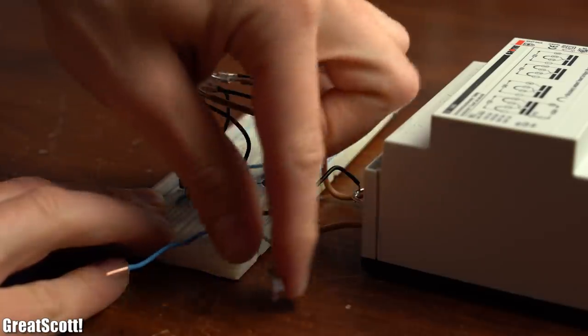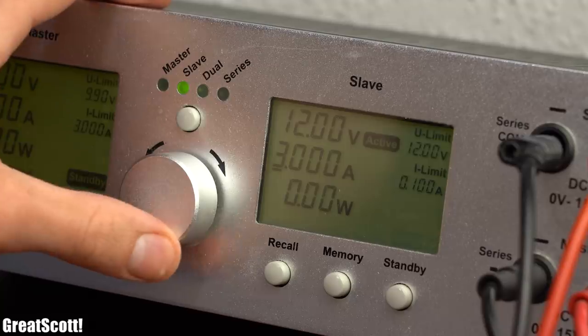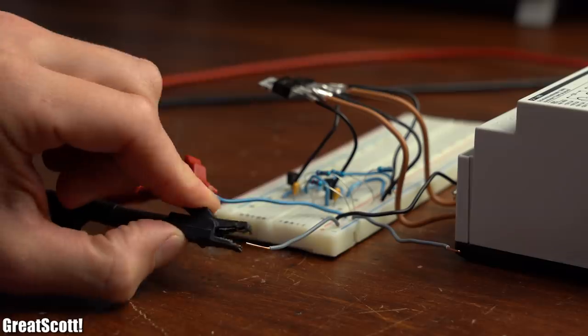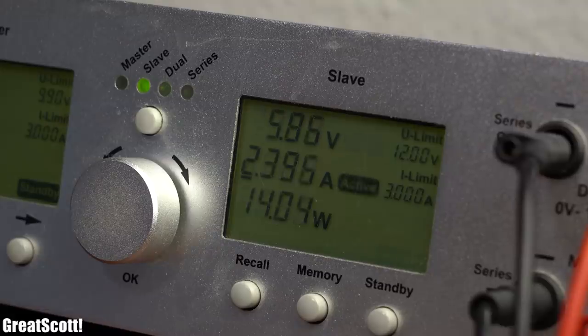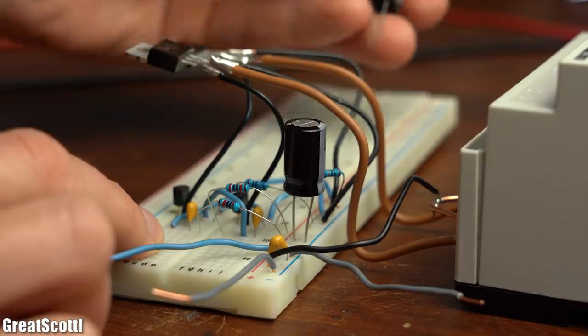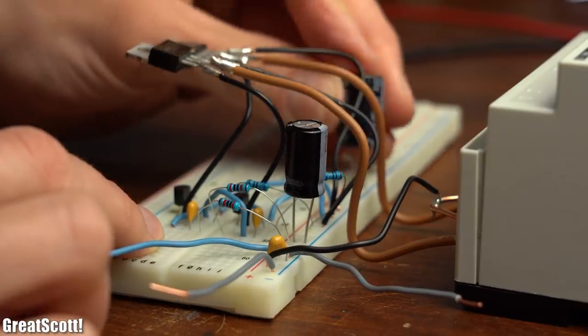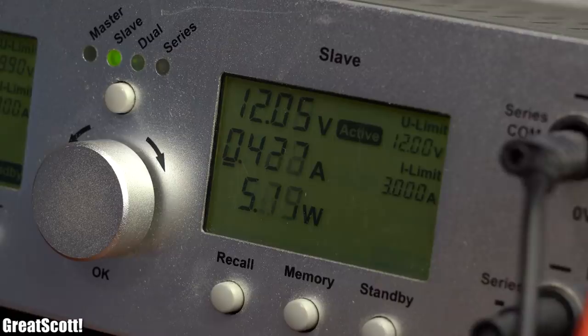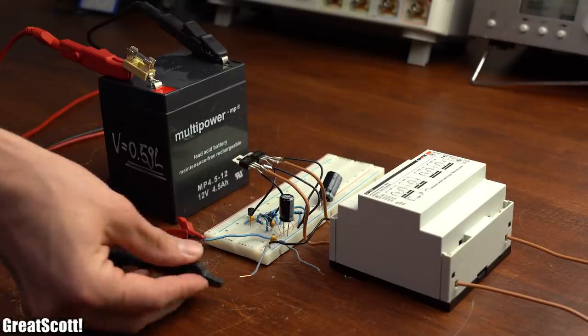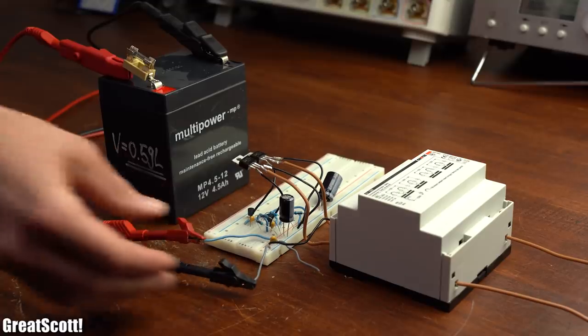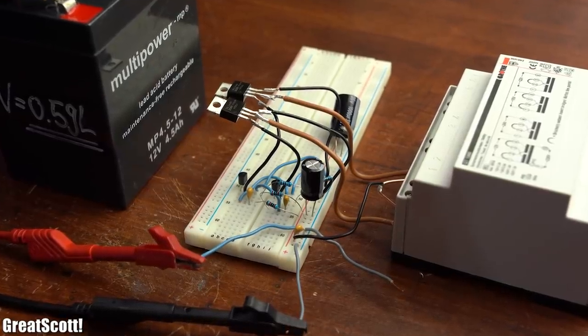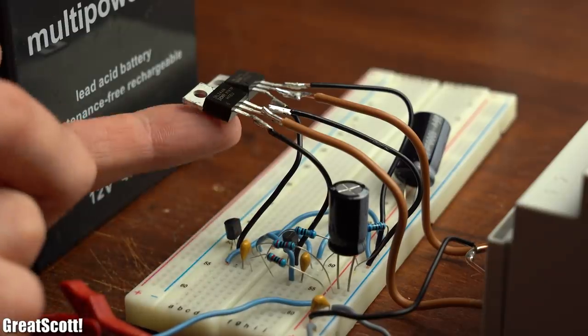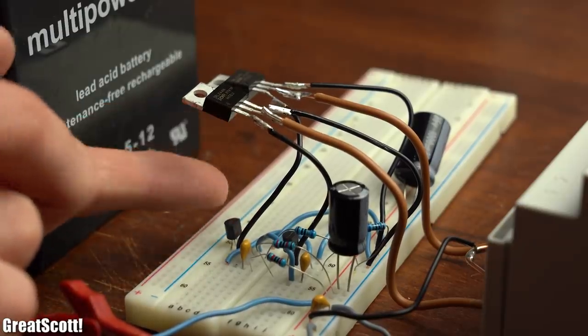So after double checking all of the connections, it was time to test the circuit with my lab bench power supply. And it seems like the circuit didn't feel like working yet. But after adding a bit of capacitance to the input of the circuit as a buffer, the current consumption seemed normal, and thus it was time to hook up the 12V battery.